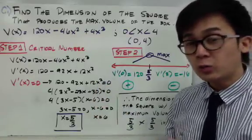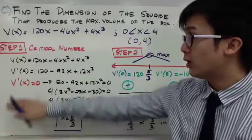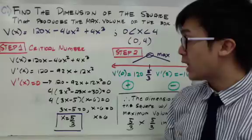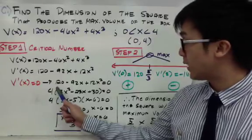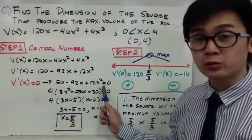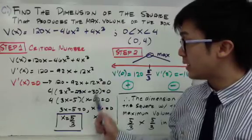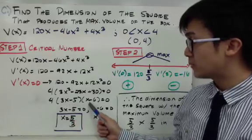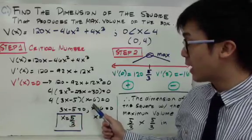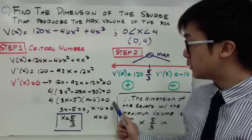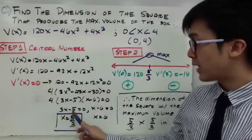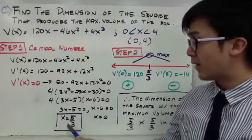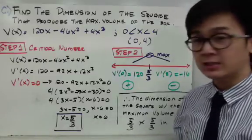There are two ways to find the values of x from the first derivative: factoring or the quadratic formula. Factoring gives 4 times (3x minus 5) times (x minus 6). Using the zero product property: 3x minus 5 equals 0 and x minus 6 equals 0, solving to x equals 5/3 and x equals 6.